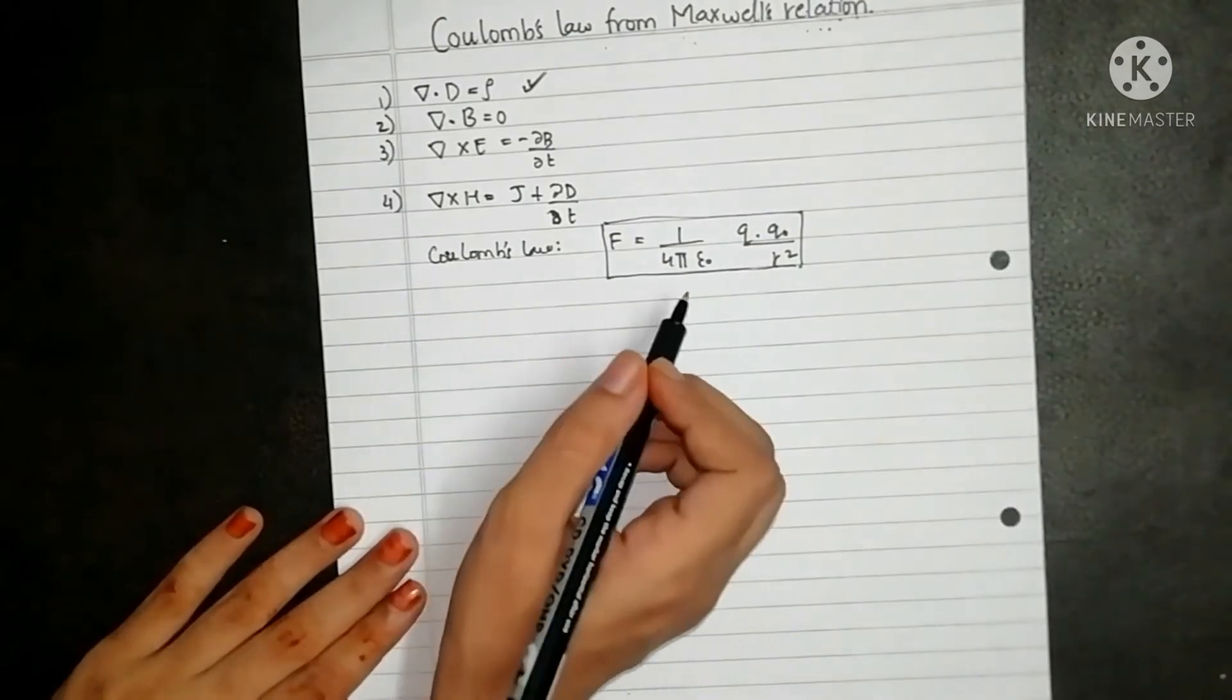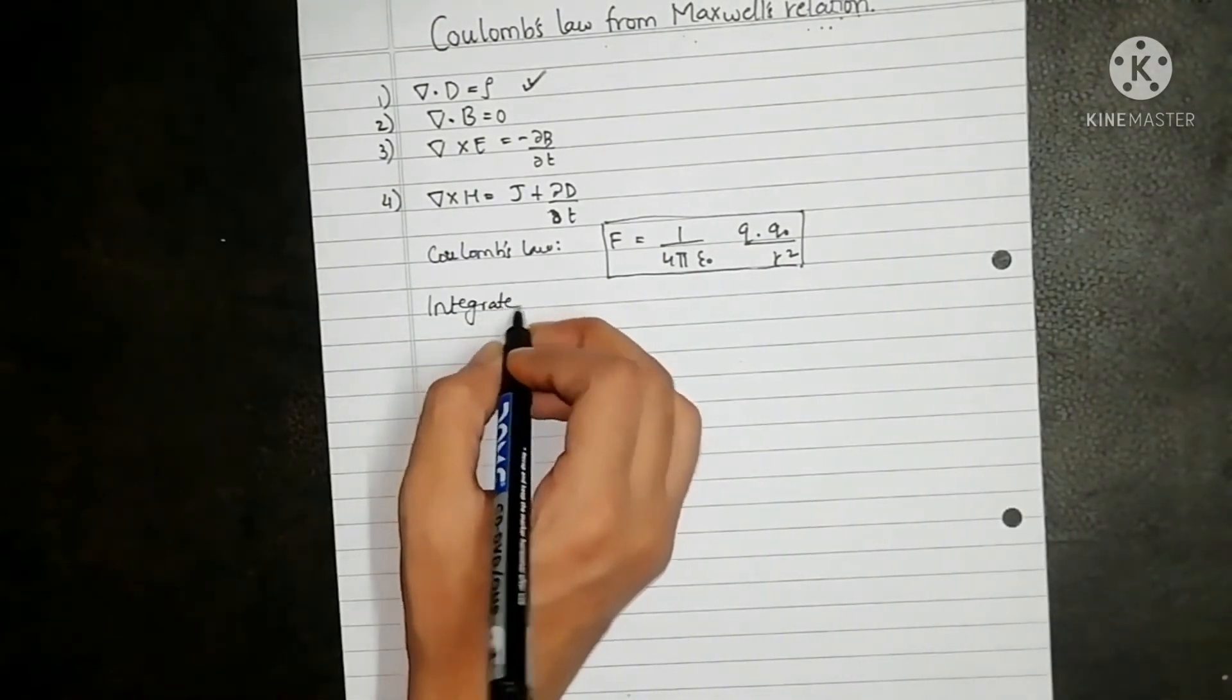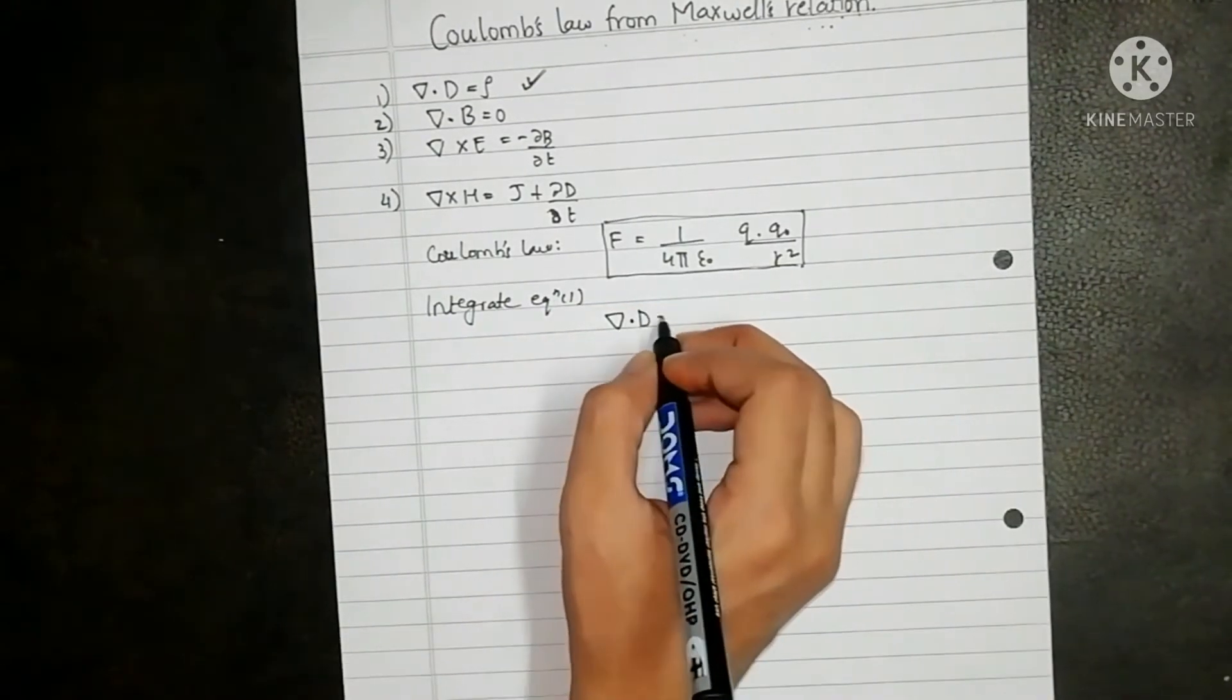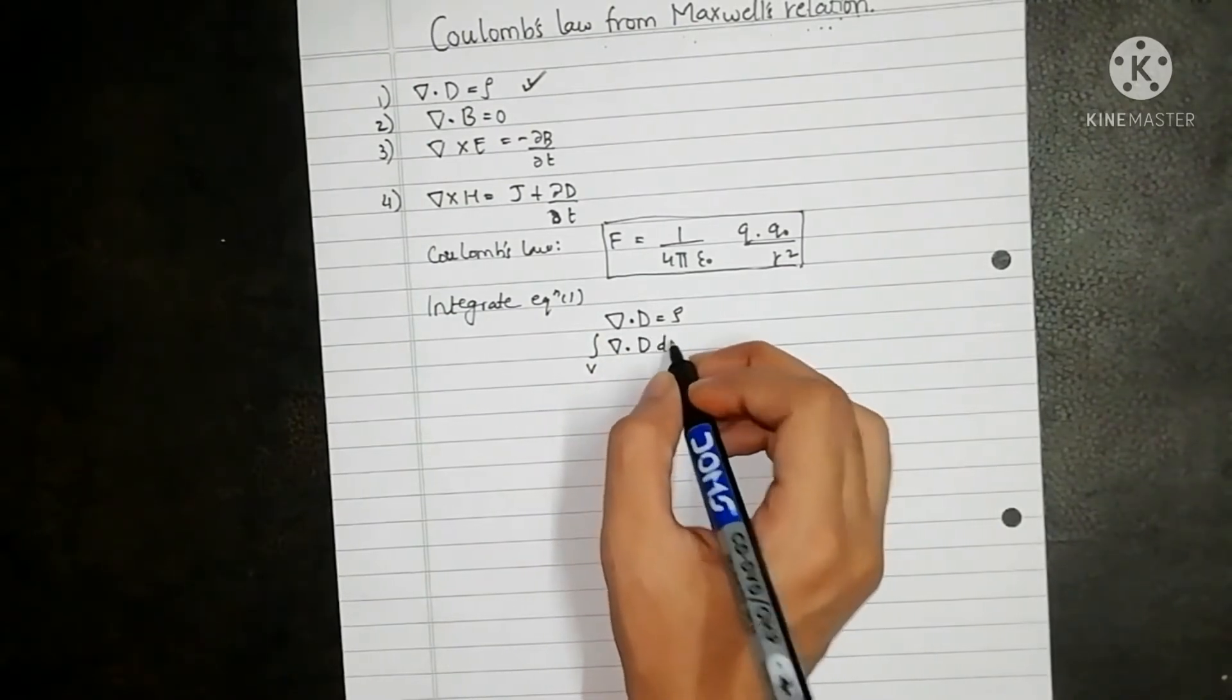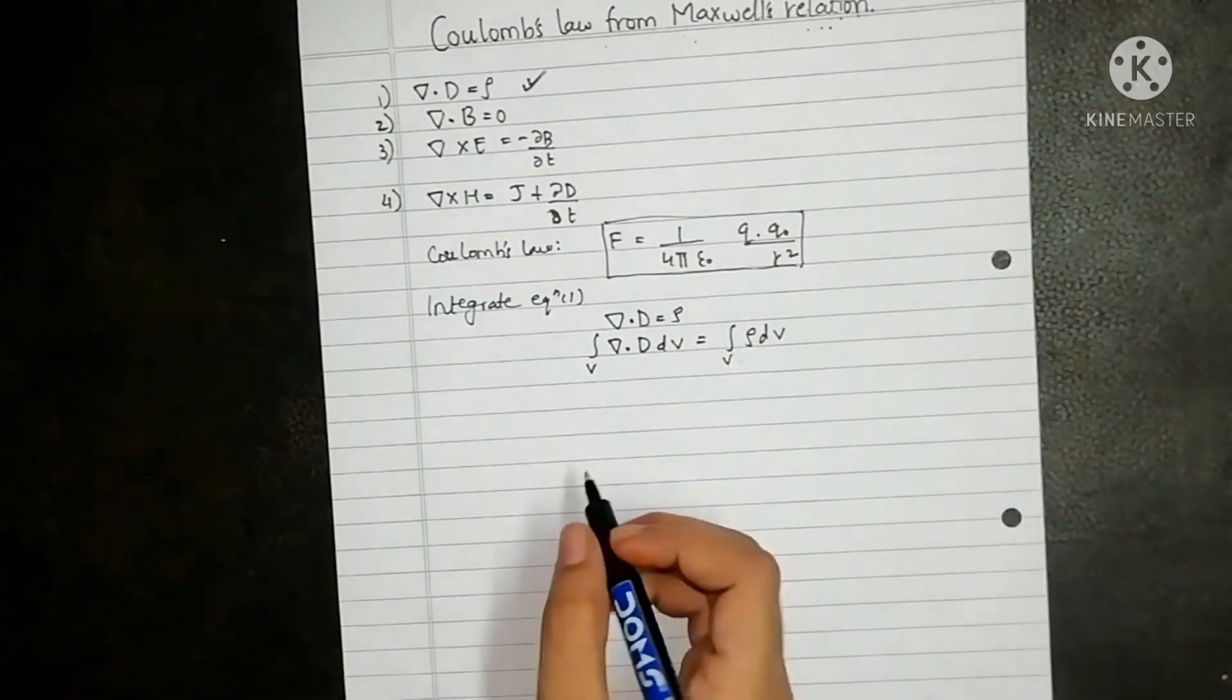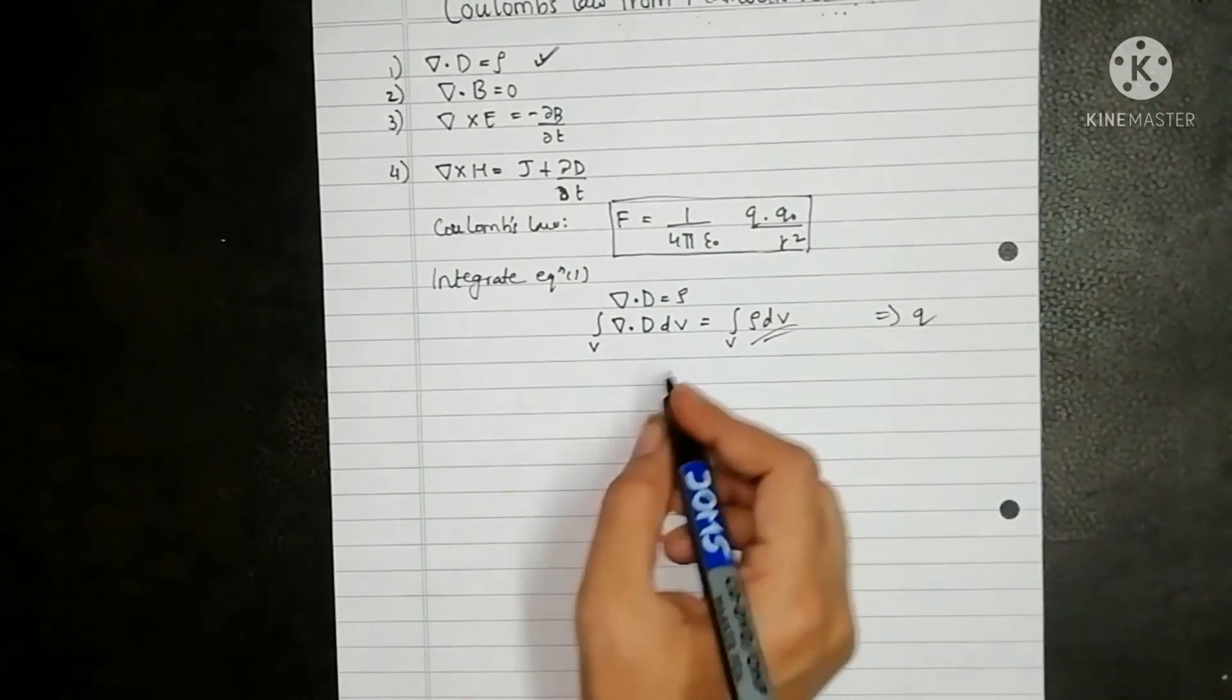So in order to derive this, we will integrate equation 1. Del dot D is equal to rho. On taking volume integral, volume integral of del dot D dV is equal to volume integral of rho dV. Now as we know, integral of rho dV is nothing but Q, so this is equal to Q.